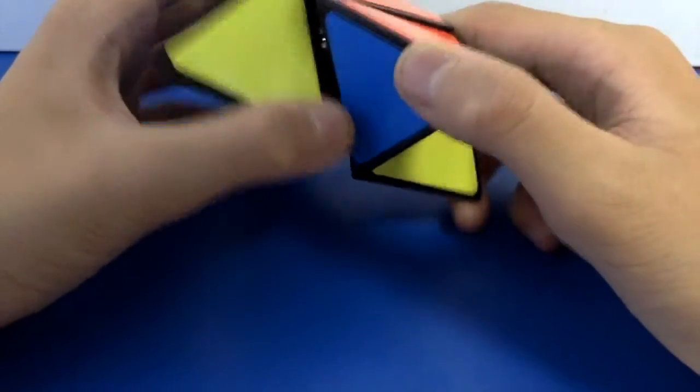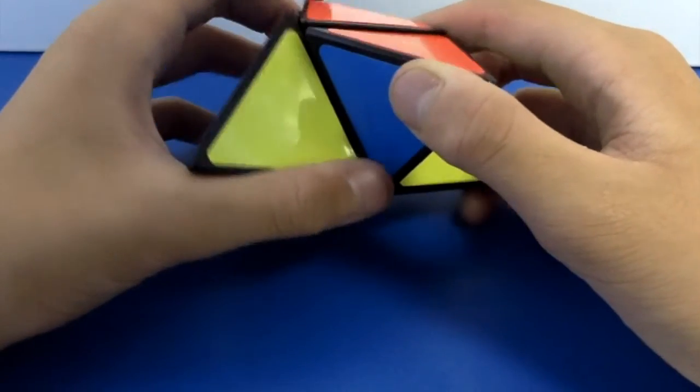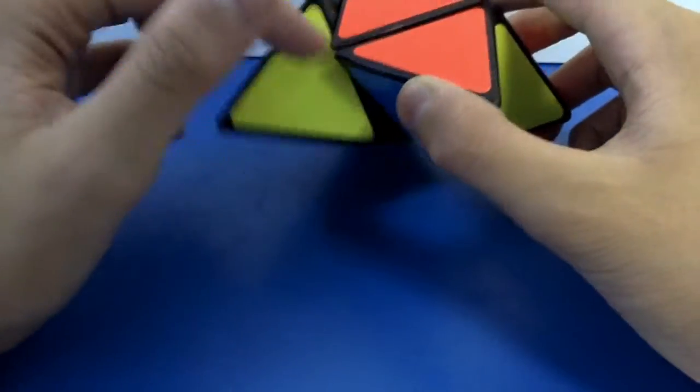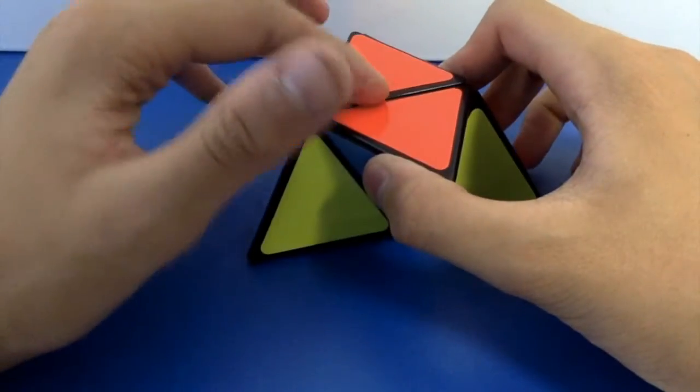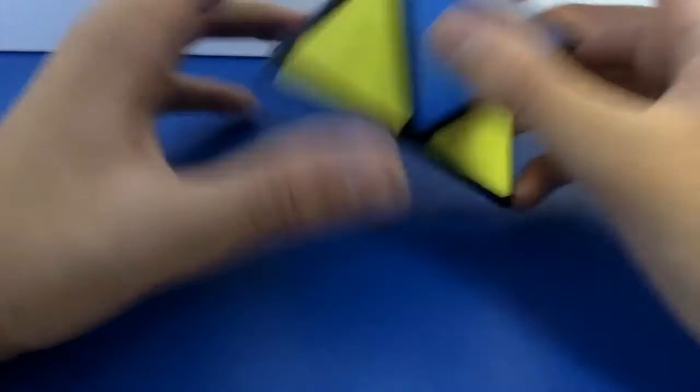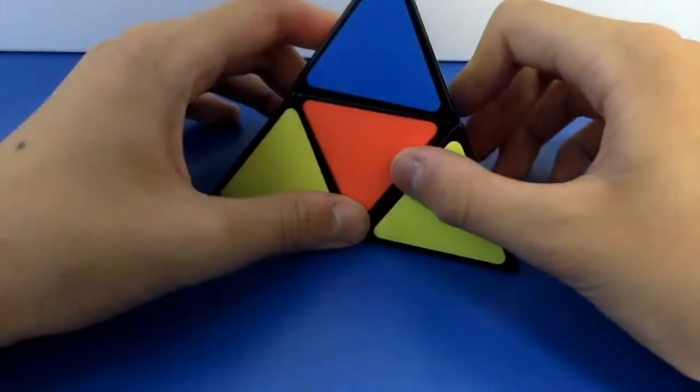I think my method is much better than the colorful pocket method. Because for the instruction that follows this cube, it says you have to turn into a pyramid first and then solve it. But for mine, you can solve back to a pyramid during your solving.